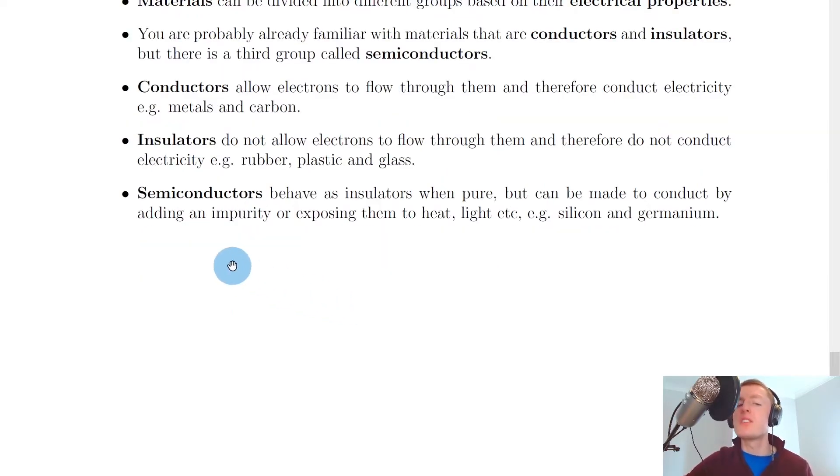Lastly, we have semiconductors and this is the one that is possibly new to you. So it says here that semiconductors behave as insulators when pure, but can be made to conduct by adding an impurity or exposing them to heat or light, etc. For example, silicon and germanium are good examples of semiconductors.